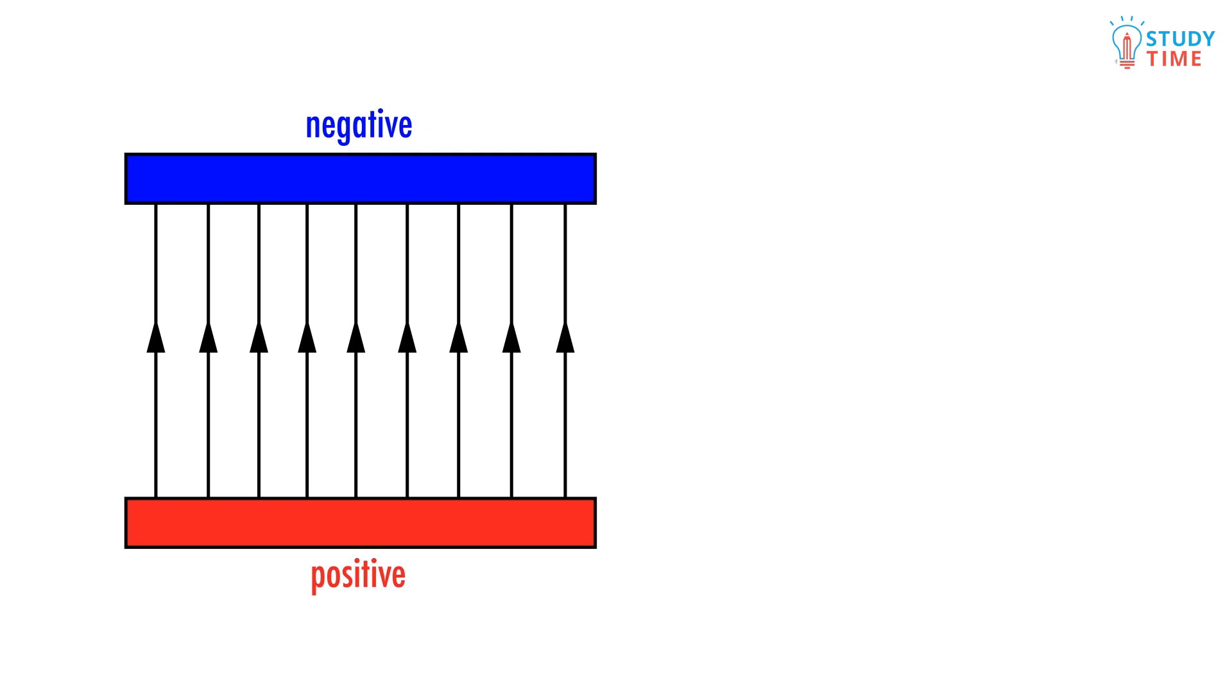Or what if we managed to find a single electron behind our couch, and we stuck that inside the field? It would move away from the negative plate, because like charges repel, and it'd head towards the positive plate, because opposite charges attract. So you can see that the arrows we draw on the field lines only show us the direction that a single positive charge would move in. Beyond that, they don't really mean anything. All we're doing when we're drawing them is following someone else's rules.